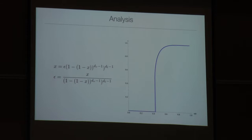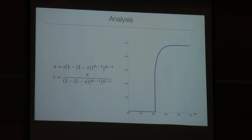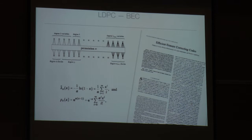Degrees of freedom include using irregular graphs with variable node and check node degrees that are not all the same. For the Gaussian channel — more interesting for wireless — capacity-approaching performance was demonstrated about 15 years ago. Given a target error probability requirement such as block error probability of 10^{-4}, you can optimize the degree distribution parameters to find codes that get close to the capacity curve.